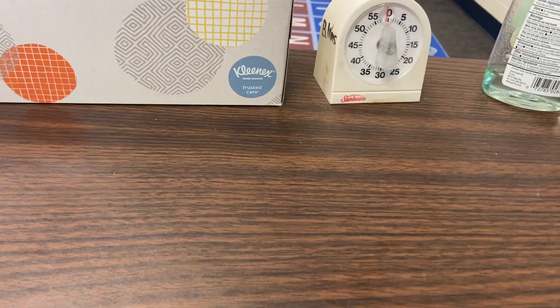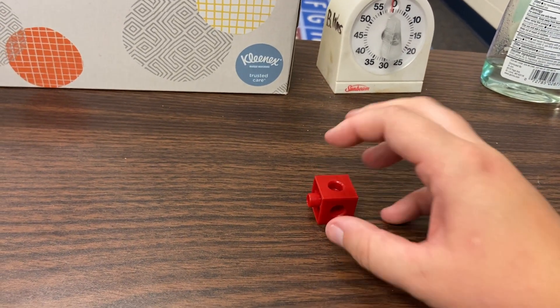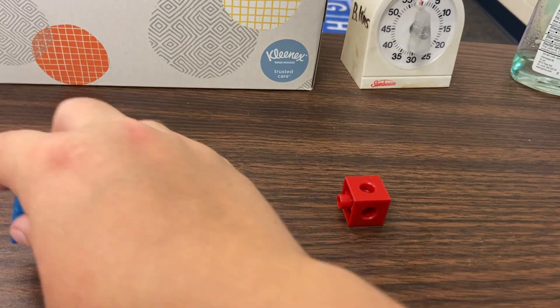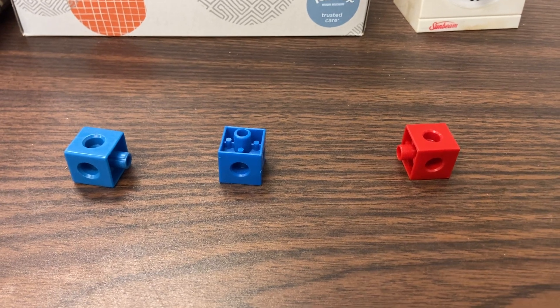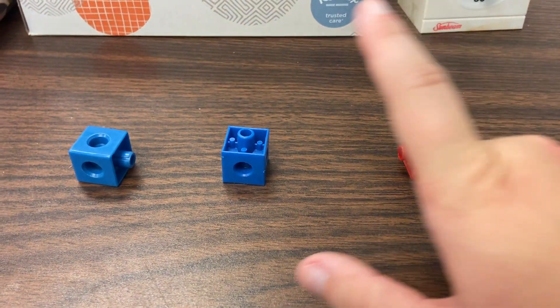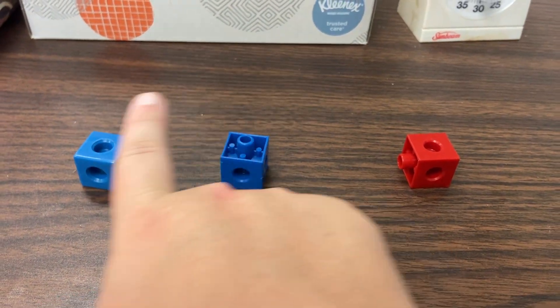Now take your squares and put one red square and two blue squares. How many squares do you have in all? So we have one red and two blue. One, two.